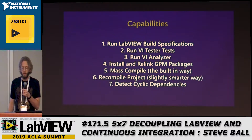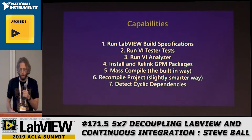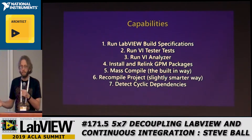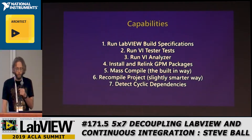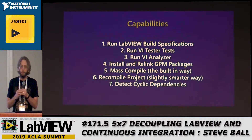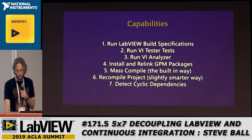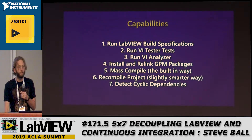What this thing can do: the basic stuff — run a LabVIEW build spec, run any product VI tests, whitelist or blacklist tests, run VI Analyzer, and test different parts of your code with different static analysis files. We use GPM, and it has tools that will help you relink packages or recompile your project in order of dependencies. You can also use it to mass compile and look for cyclic dependencies in your project — things generally of interest in your CI system.